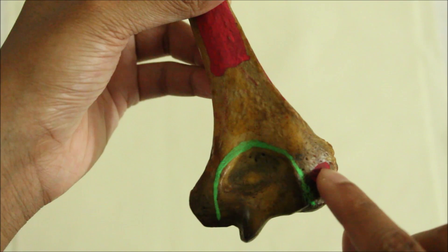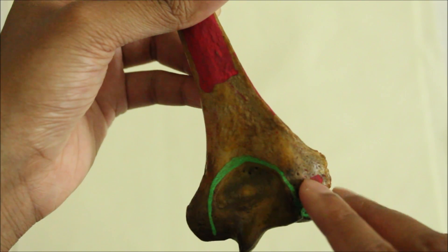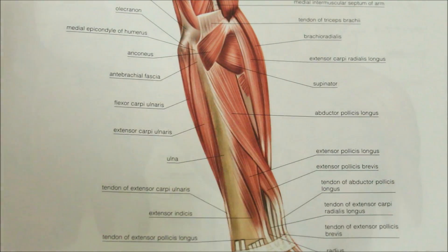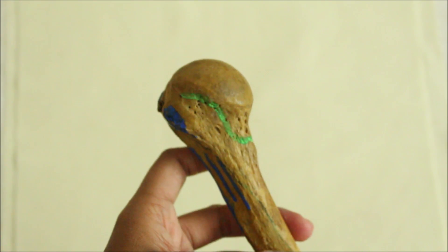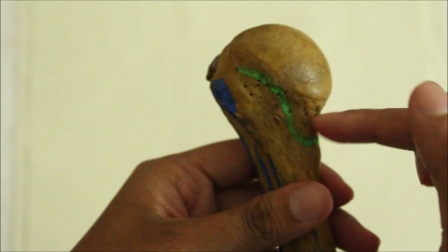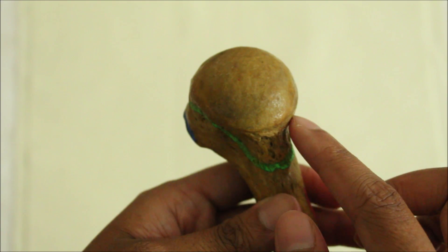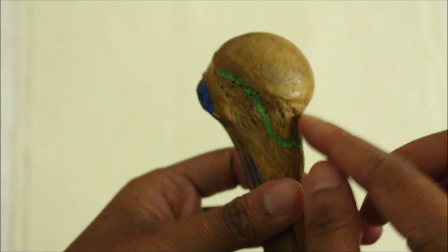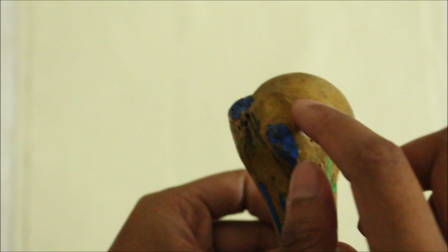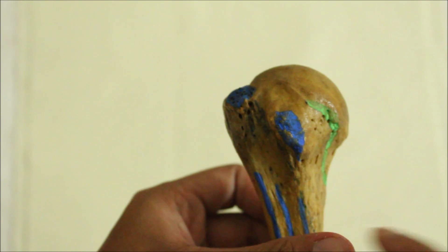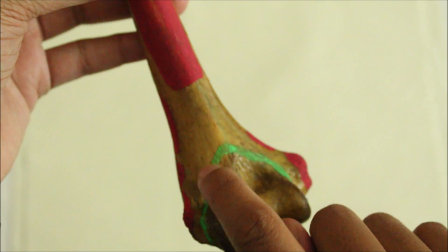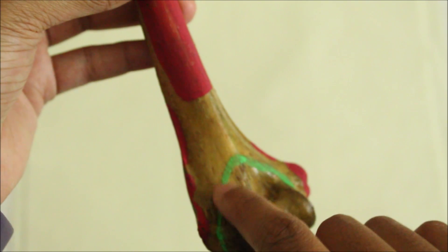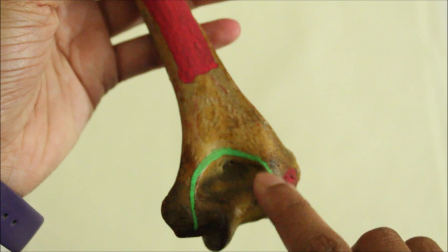The anconeus originates from the posterior surface of the lateral epicondyle. Regarding the attachments of capsules, the capsular ligament of the shoulder joint is attached to the anatomical neck of the humerus, except for its medial part where it lies a little below and includes a small part of the shaft. It is also limited at its upper end where it provides a passage for the biceps brachii tendon near the intertubercular sulcus. The capsular ligament of the elbow joint is attached along a line that reaches the upper ends of the coronoid fossa and the radial fossa anteriorly and the olecranon fossa posteriorly, so that these fossae lie within the joint cavity.